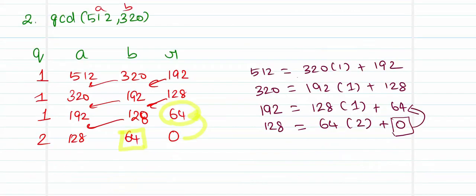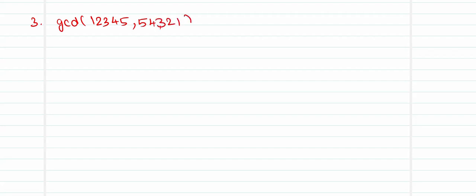We will do one more problem. Problem number 3: find the GCD of the elements 12345 and 54321. A must always be the larger number and B the smaller. So we interchange positions so that A becomes 54321 and B becomes 12345. We set up columns for A, B, Q, and R.